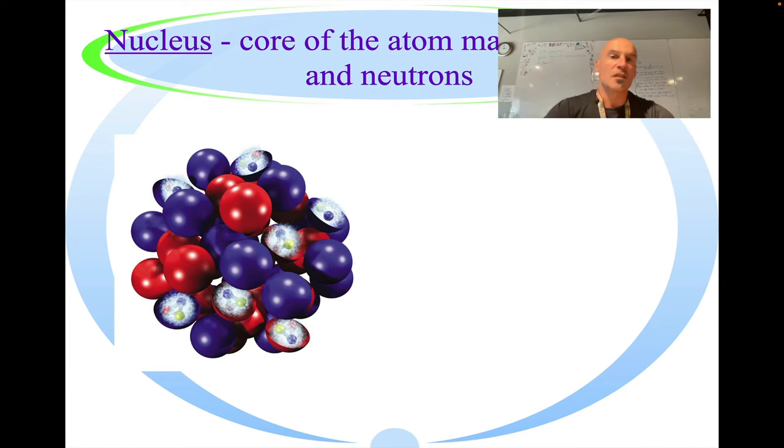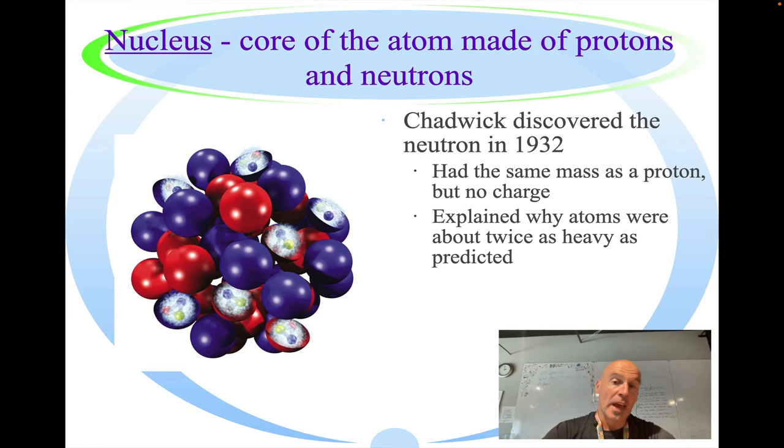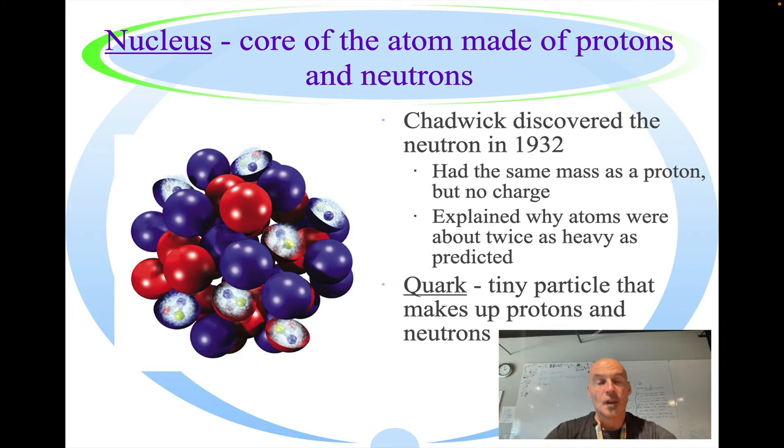The nucleus is the core of the atom made of protons and neutrons. Chadwick discovered the neutron in 1932, so it's been around a while. Actually, it was probably around before he discovered it. He discovered that it had the same mass as a proton, but it had no charge. This explains why atoms were about twice as heavy as they were once predicted.